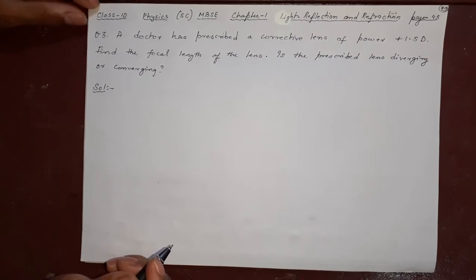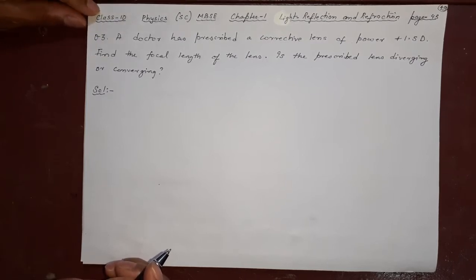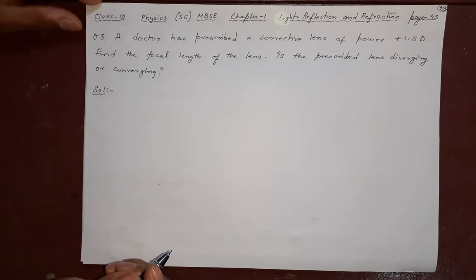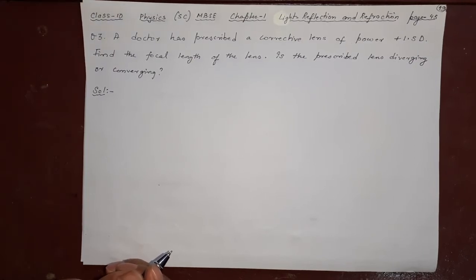Light, Reflection and Refraction is the name of the chapter. The page number is 45 from your textbook. This is the third question among the numericals. We have already finished the theory part. I am doing the numerical now.